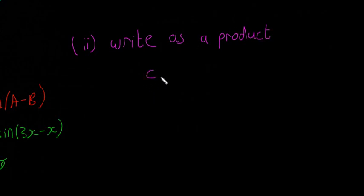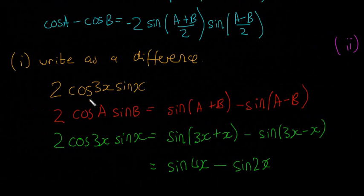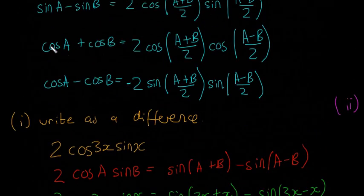This time it's write as a product. And they want us to write cos 5a plus cos 3a. They want us to turn that into a product. So a product means two things multiplied by each other. So we're going to look for the cos of a plus cos of b. This one here. You have to write that formula out.